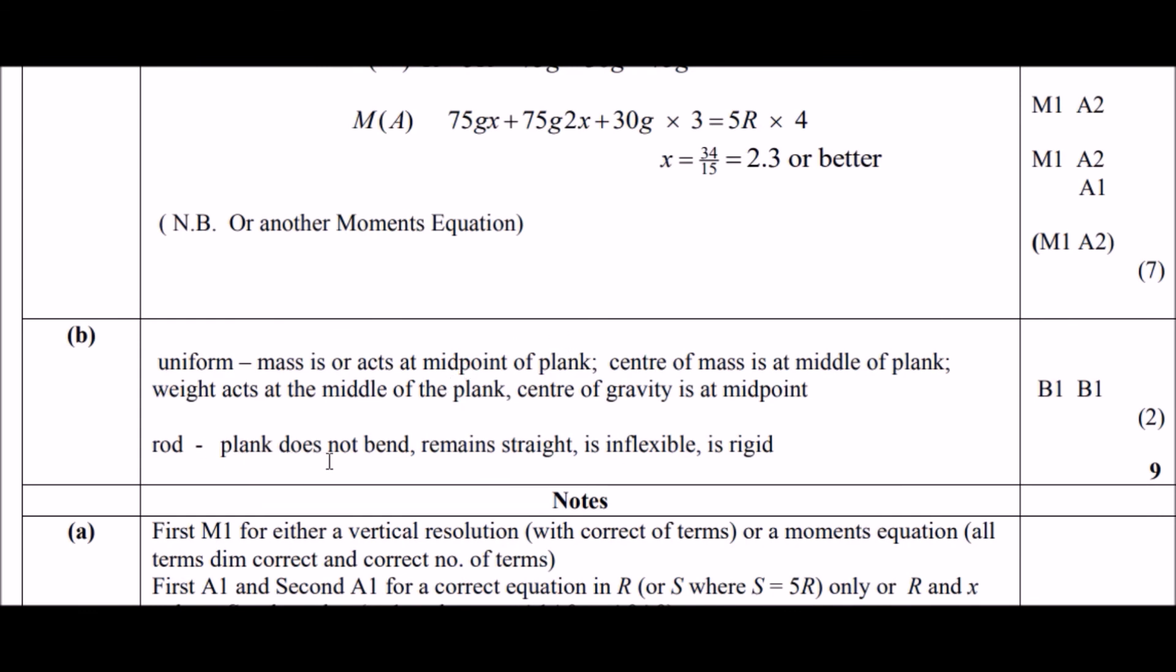Looking at the mark scheme, it states that uniform mass is or acts at midpoint of plank, so that's quite clear. I'll take this definition: the center of mass is at the middle of the plank. So something that implies that uniform means, in terms of rods, that the center of mass is bang in the center or in the midpoint. As for the rod, it just means that it does not bend, must be straight. Because of course if it is bent then the center mass could be elsewhere. Is inflexible, is rigid. I would use pretty much that the rod is straight and does not bend, probably rigid too. And yeah that's really it. So let's move on to the next one.